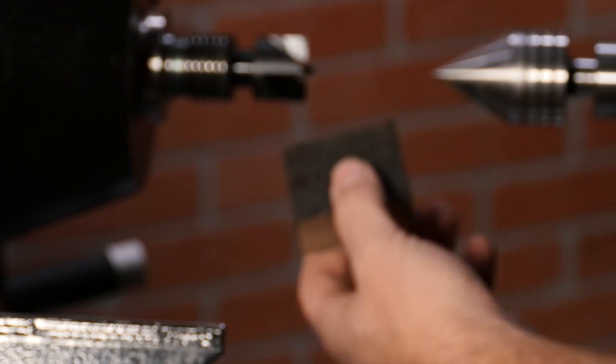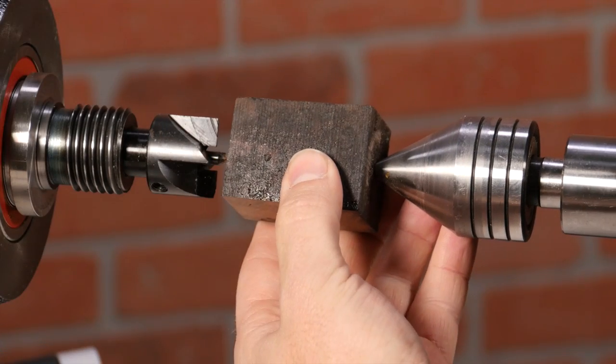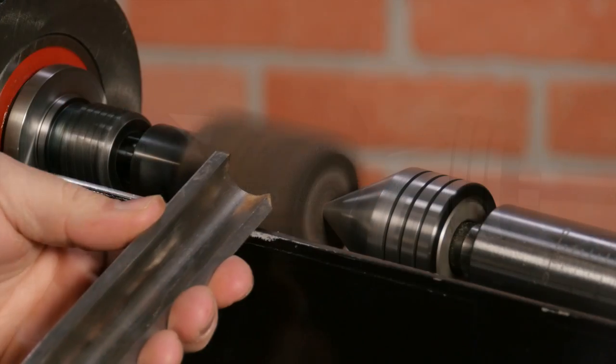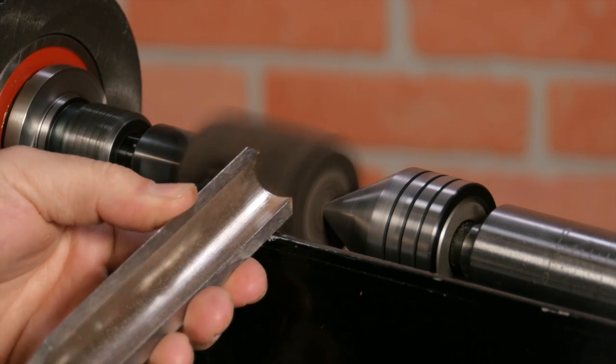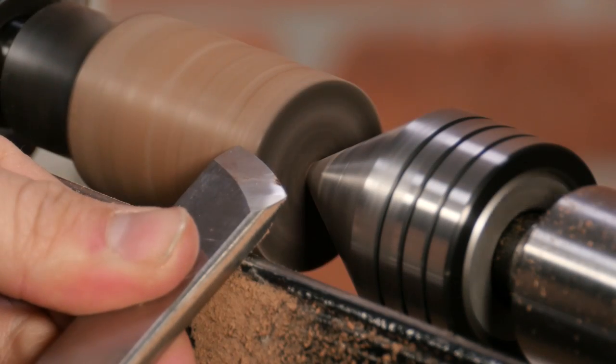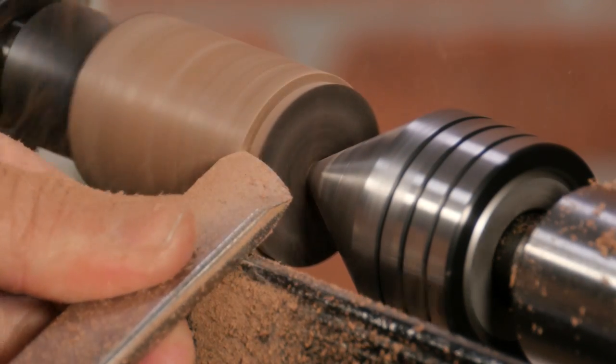Now that we have our blank, we need to mount it between centers and rough turn it round. Then use a skew laid on its side to cut a dovetail for mounting in a chuck.